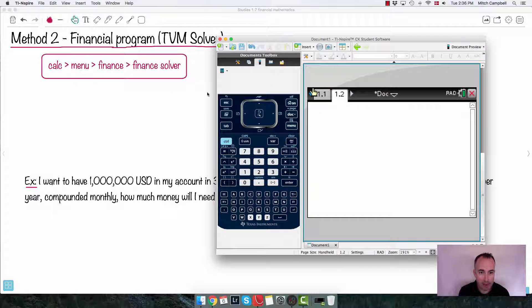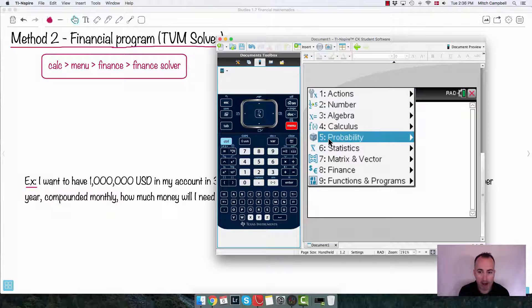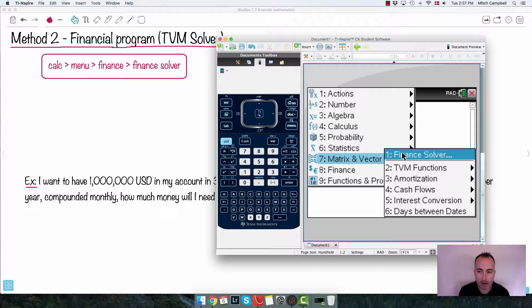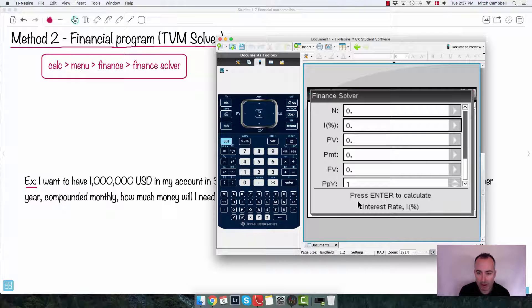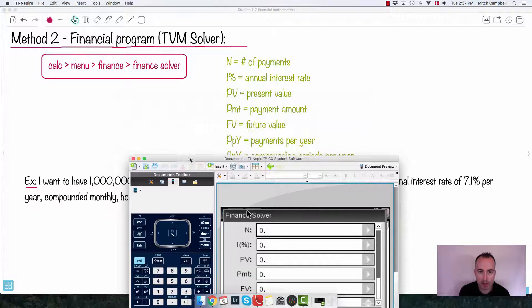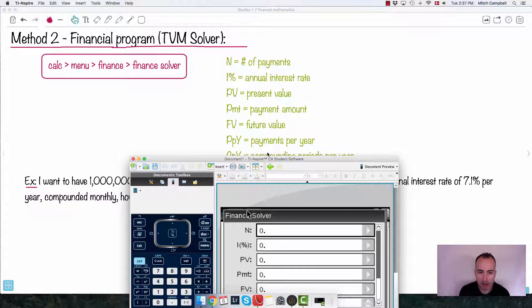So under calculator, I'm in a calculator page. I want to press the menu, do finance, and then choose the finance solver. Like I said, if you're using a TI-84, it's called the TVM solver. Either way, there's a lot of these different variables, and the good news is, notice it tells you what each of them means, which is really nice. Number of payments, annual interest rate, whatever.